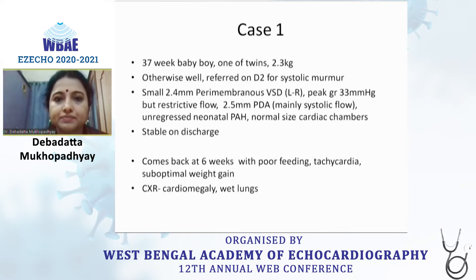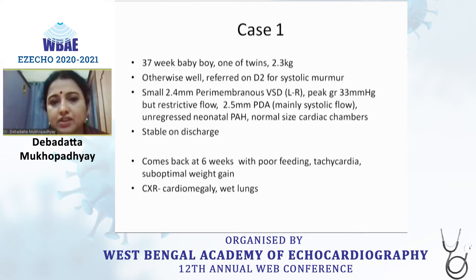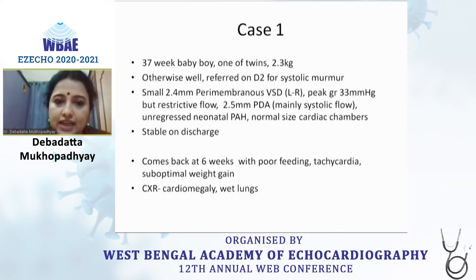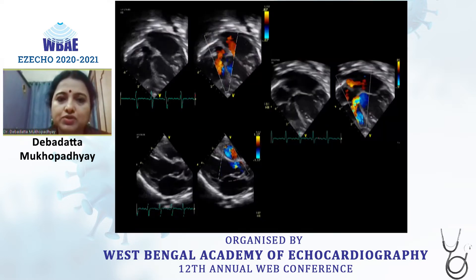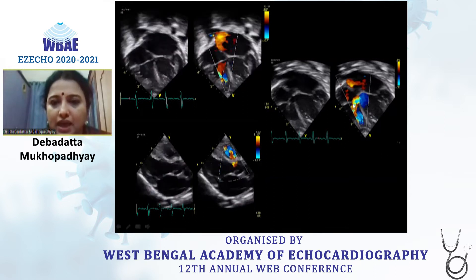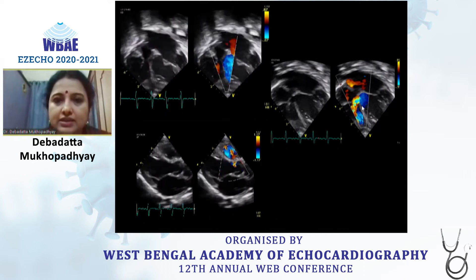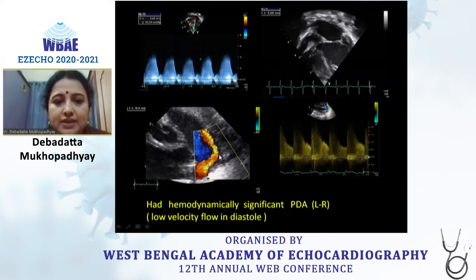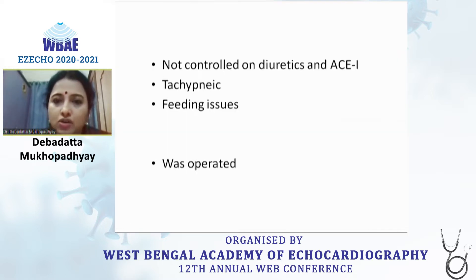Our first case is a term baby who was referred to us. The mother had a small perimembranous restricted VSD as well as a small PDA and an unregressed neonatal pH, which was not unusual at that age. The baby was discharged in a stable condition but came back with features of frank failure at six weeks. The echo showed a perimembranous VSD of about 3 mm just behind the tricuspid valve and a hemodynamically significant PDA with low velocity flow in diastole, not controlled on anti-failure treatment.